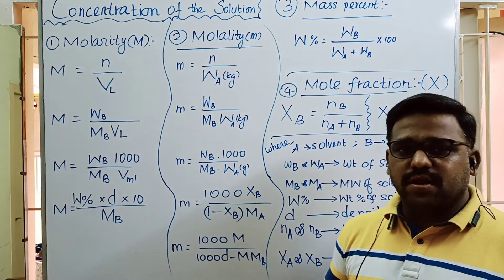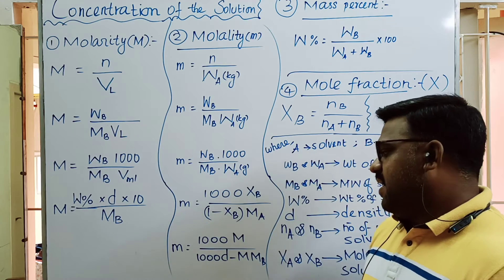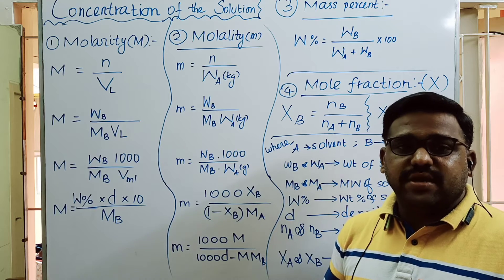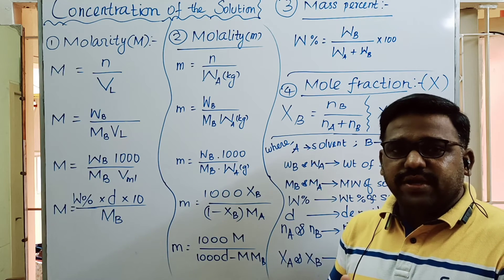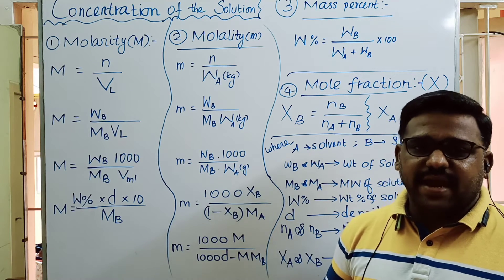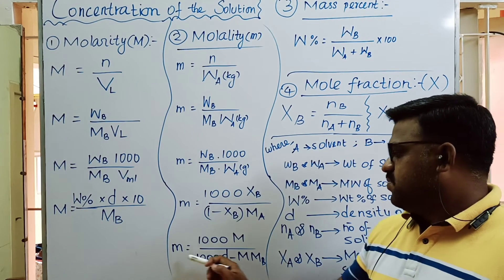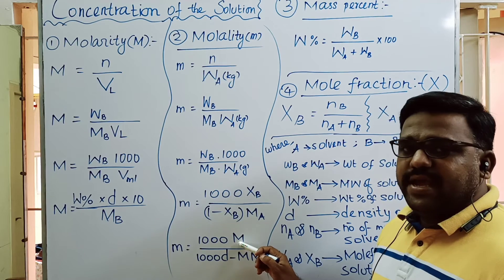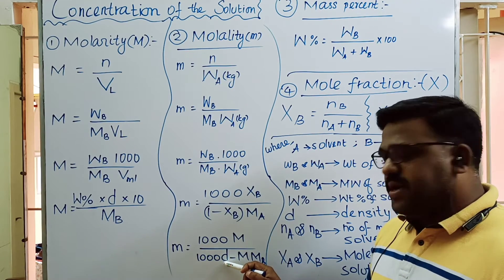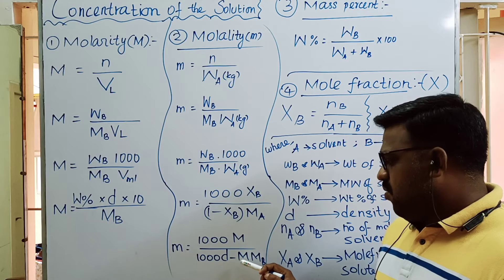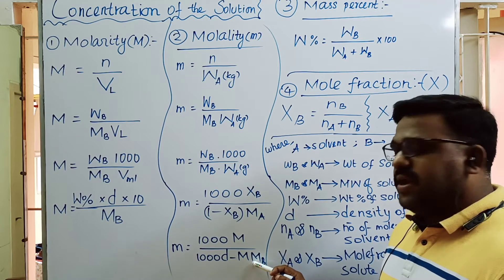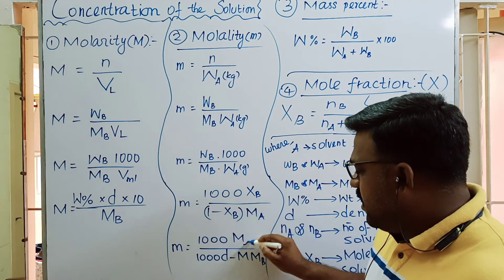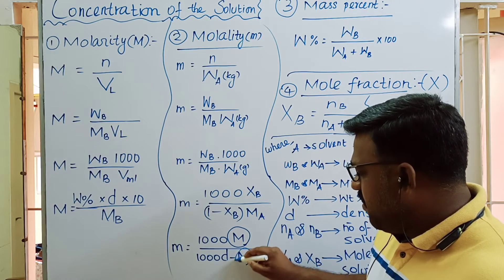MA stands for molecular weight of solvent. The last formula relates molality to molarity: molality equals 1000 times molarity divided by (1000 times density minus molarity times molecular weight of solute).